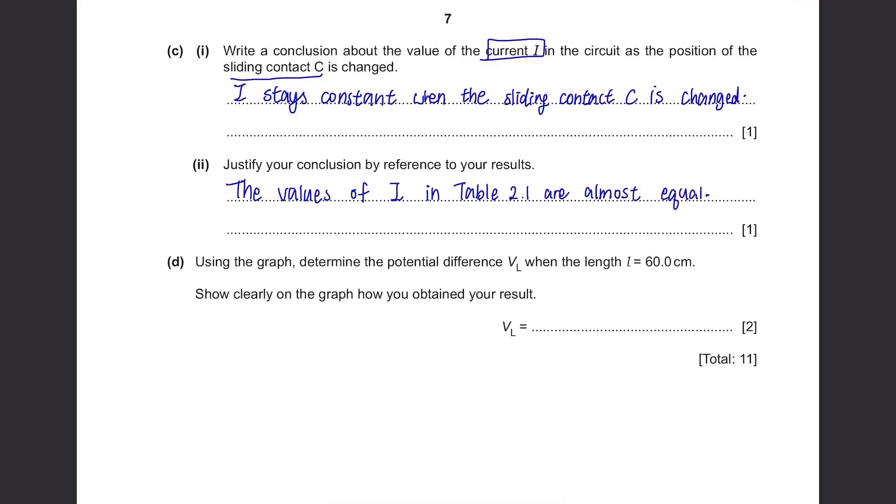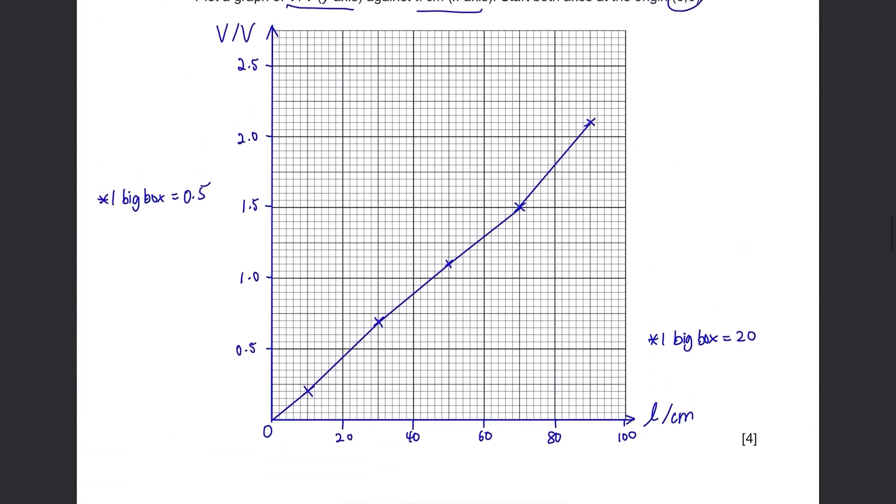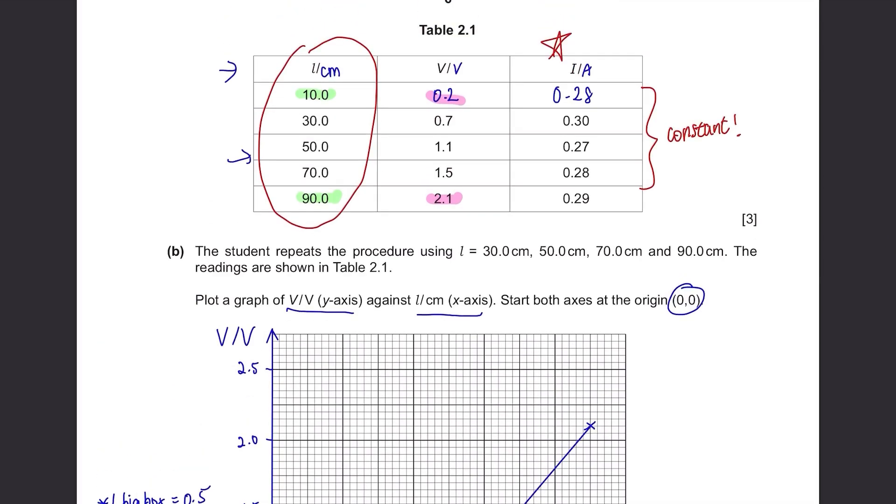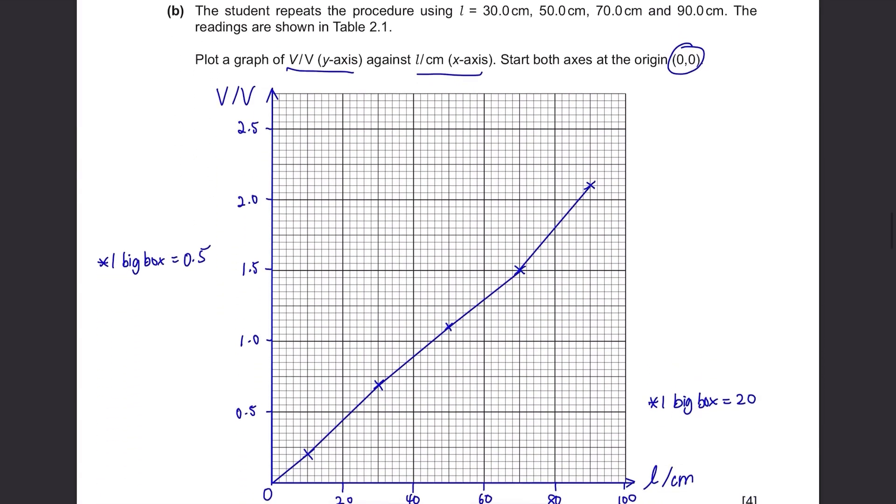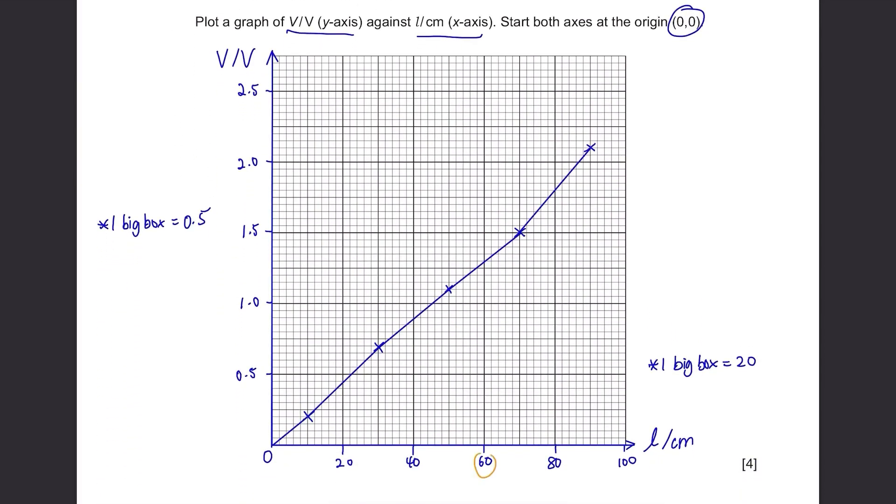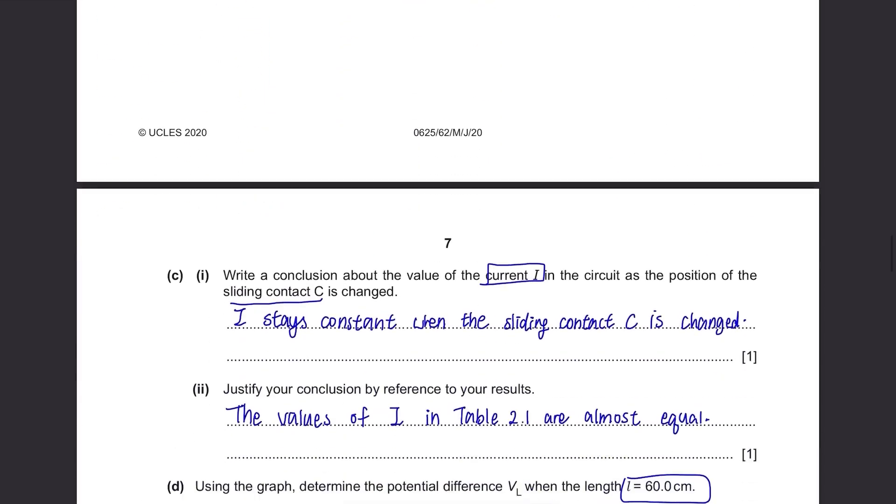Part D. Using the graph, determine the potential difference VL when the length L equals 60 cm. Show clearly on the graph how you obtained your result. When length L is 60 cm, it's not in the table but we can find it from the graph we've just drawn. Find where 60 cm is from the x-axis and see where it meets the graph. You need to leave these lines on the graph as an evidence that will mark them. The answer depends on your graph as long as you've drawn your graph correctly.